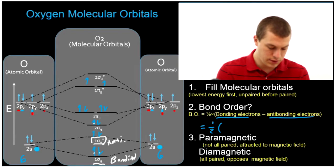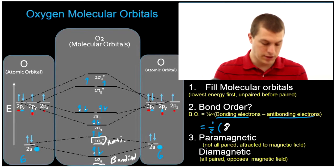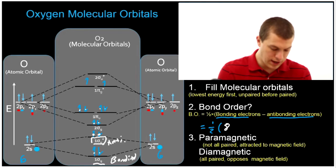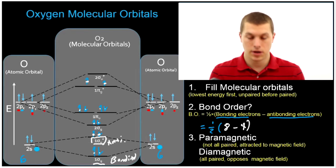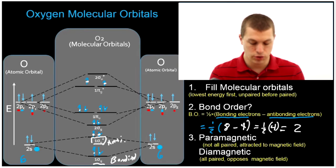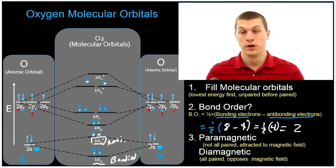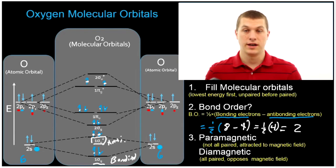We have a total of eight bonding electrons, and four antibonding electrons. So we do one half times (8 minus 4), which gives us four, and multiplying by one half gives us two. So the bond order of O2 is two. That should fit with your intuition about oxygen, since we know that oxygen in a diatomic molecule has a double bond.